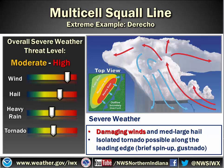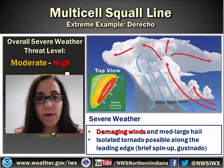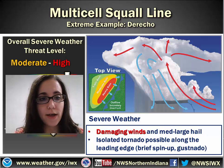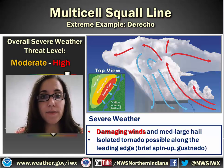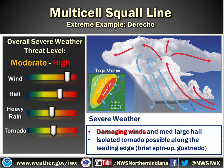As far as multi-cell squall lines go, when you start getting a better environment for thunderstorms — more instability, more wind shear — you can start seeing a moderate to high threat for severe weather. You may have heard the term derecho, which is an extreme example of a squall line that can cause significant widespread wind damage. With these storms, winds are the main threat — really strong wind gusts, those straight-line winds. You get medium to large hail depending on the environment, because those updrafts are a little bit stronger and can hold hailstones and grow them for a longer period of time aloft.